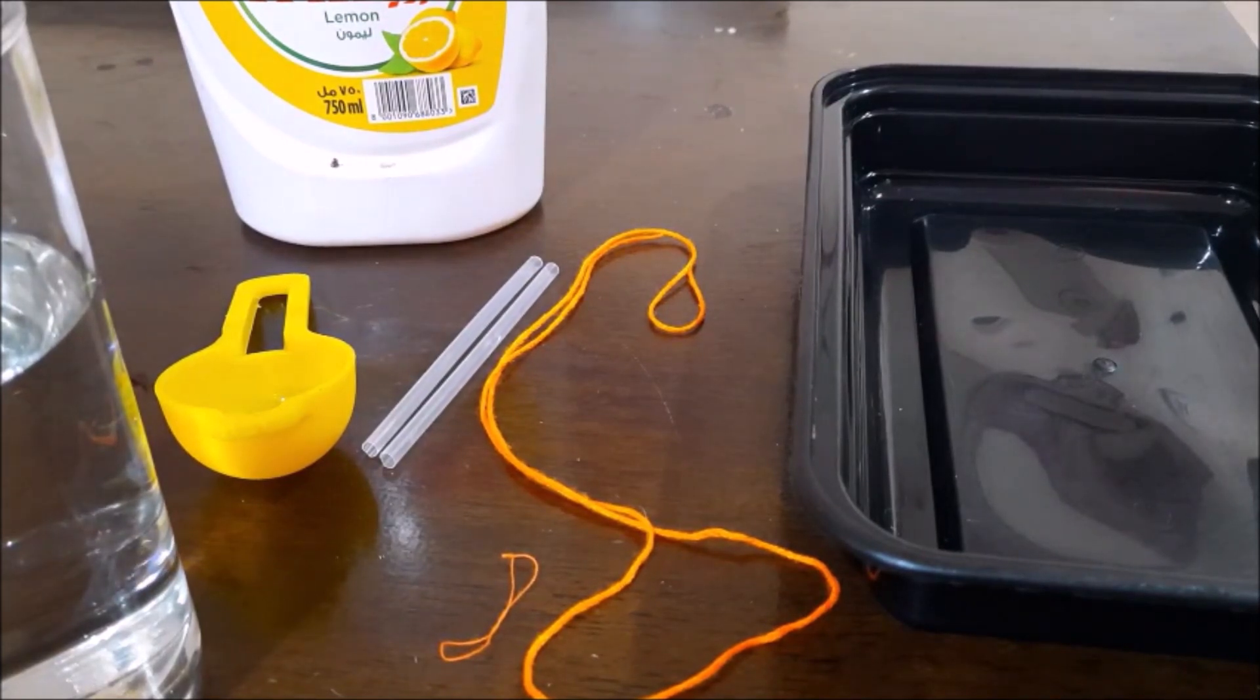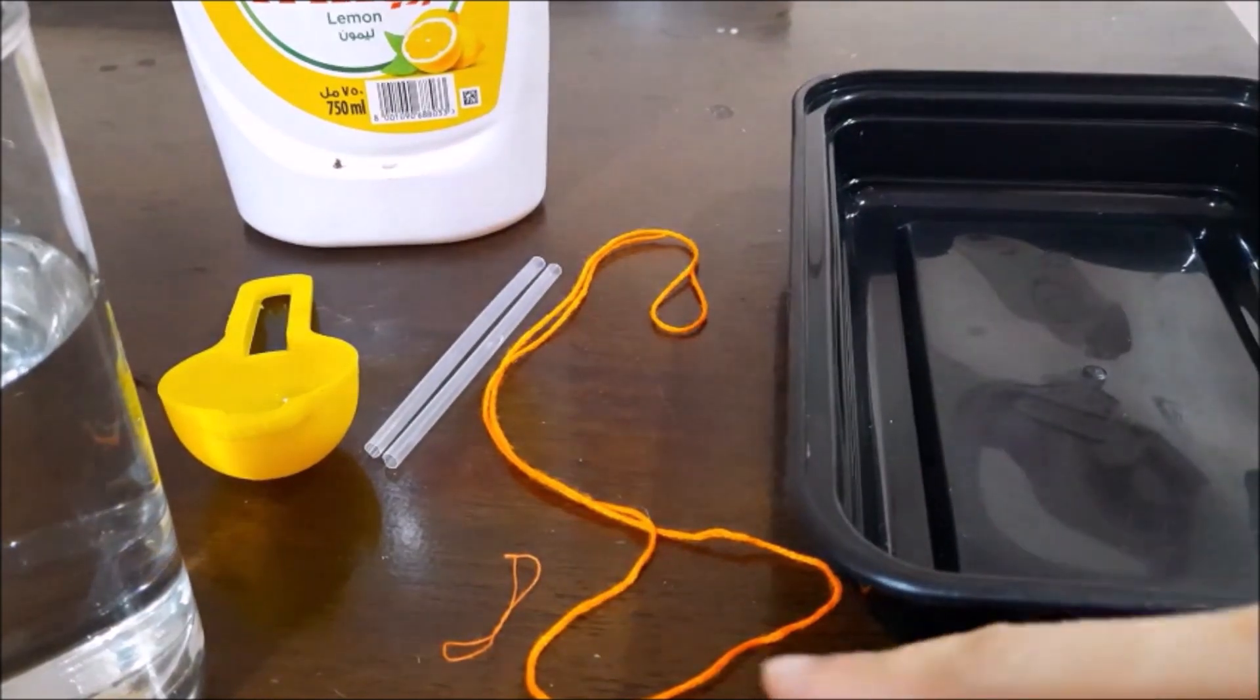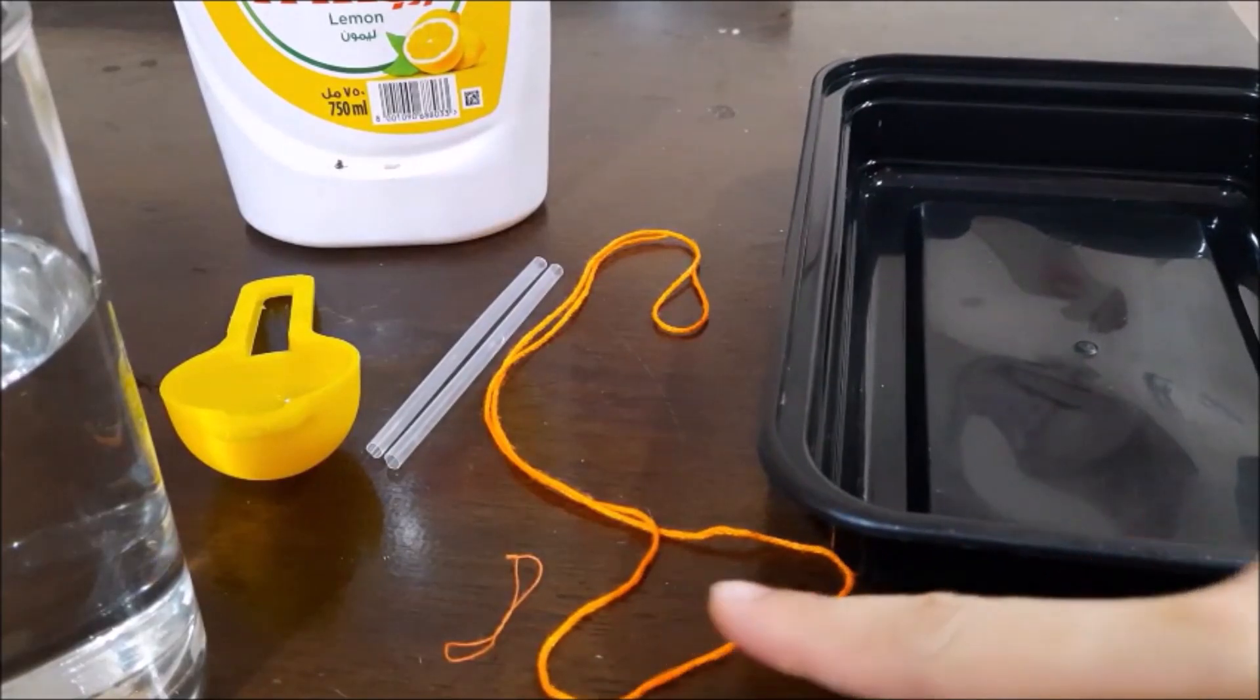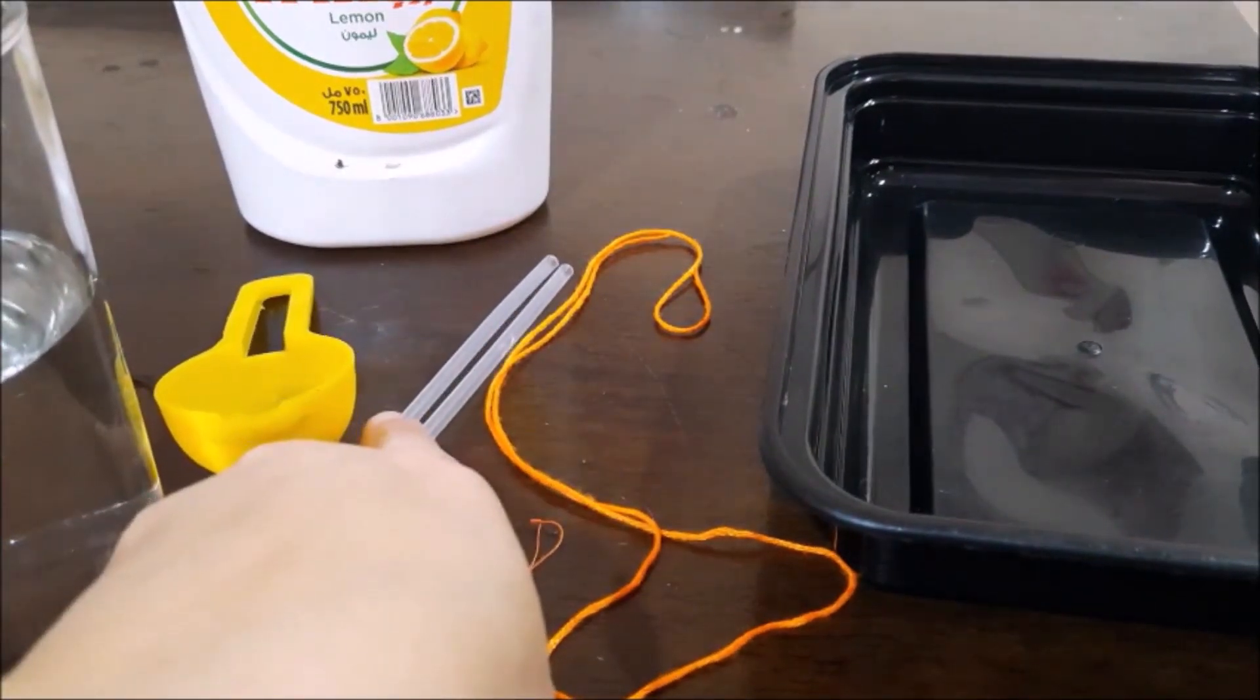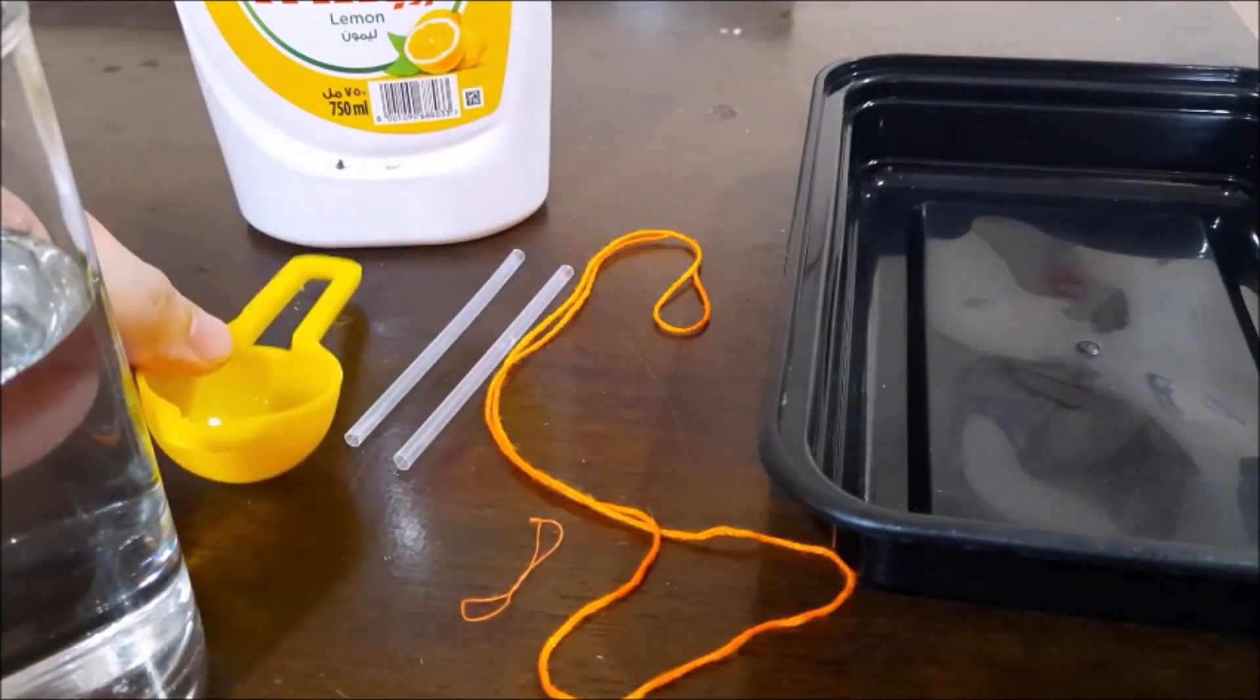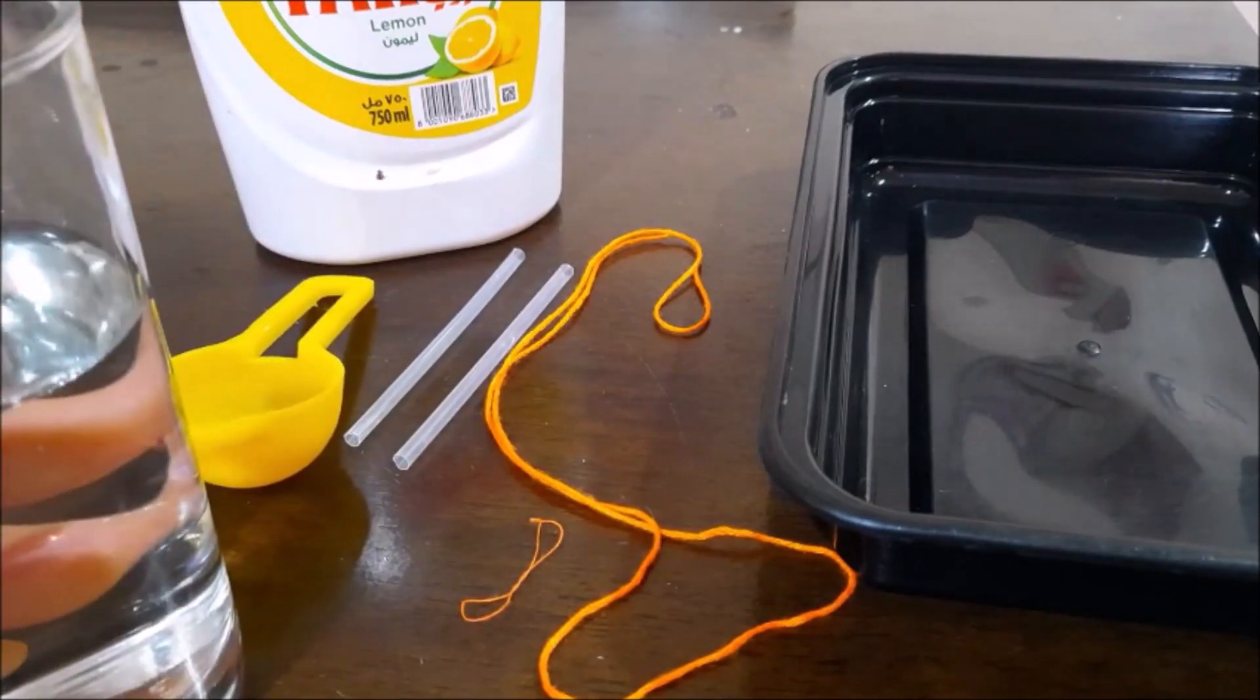These are the materials we're going to use. We need a tray, a cotton thread, a thin thread, two straws, measuring spoon, dishwashing liquid, and water.